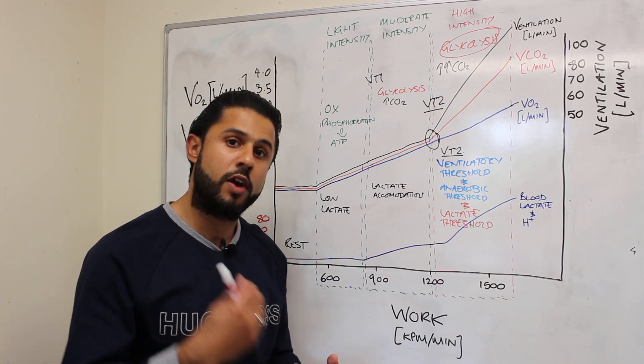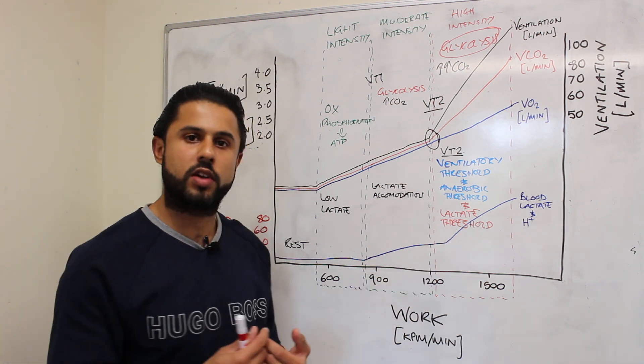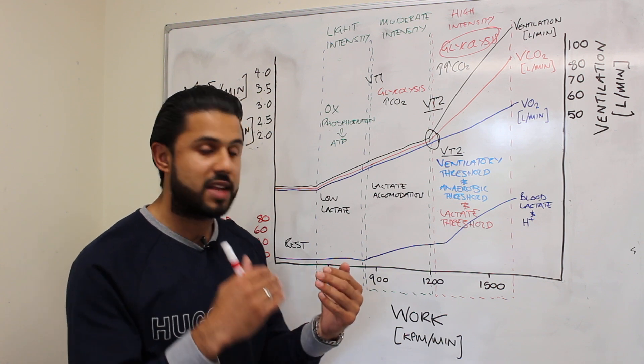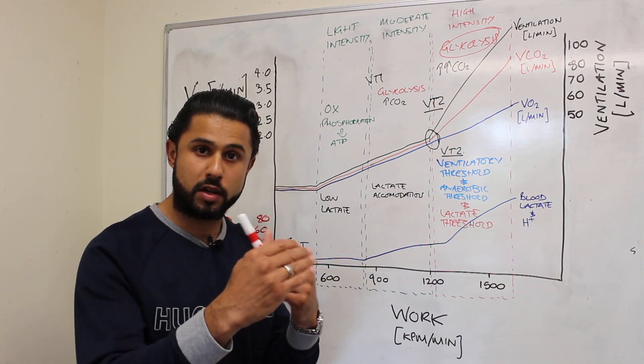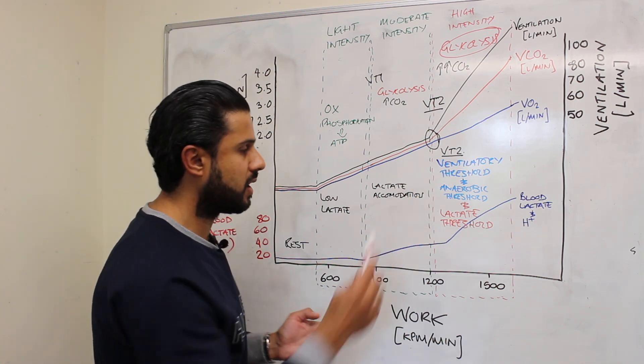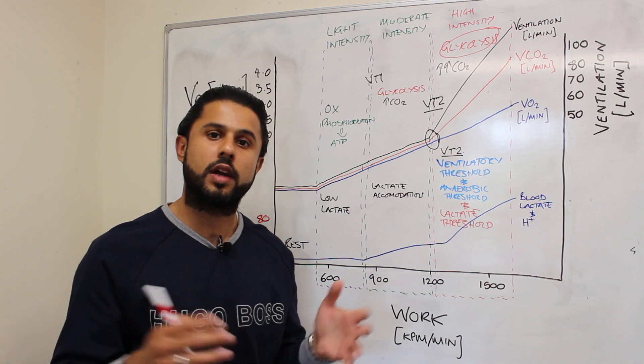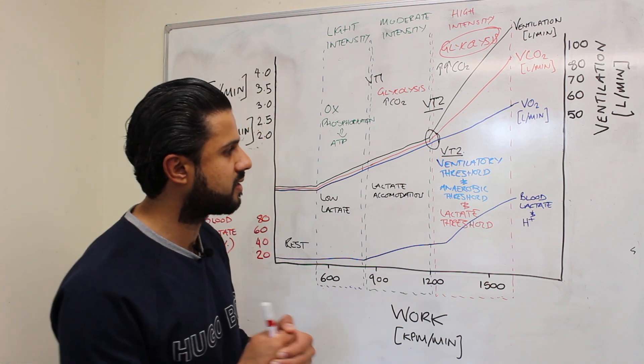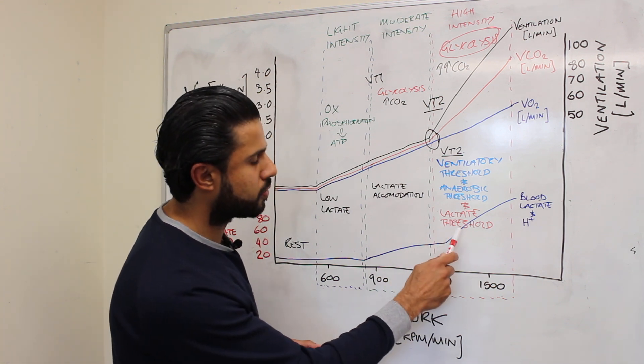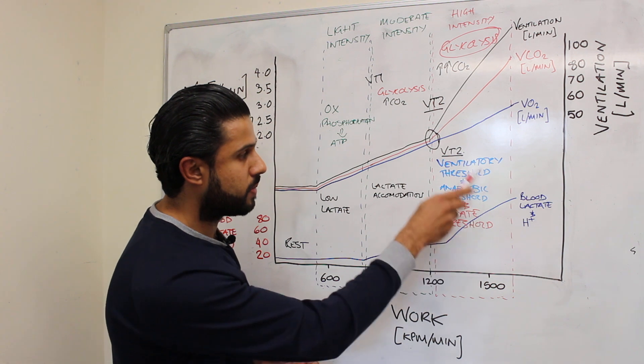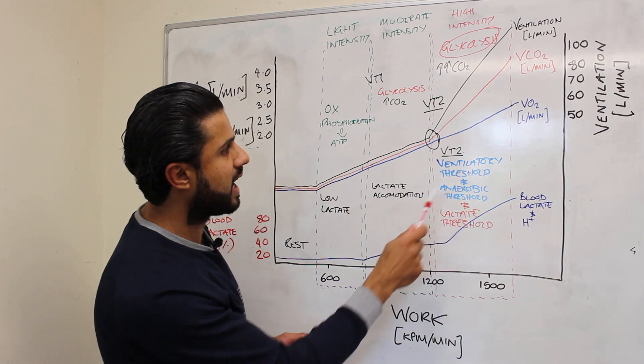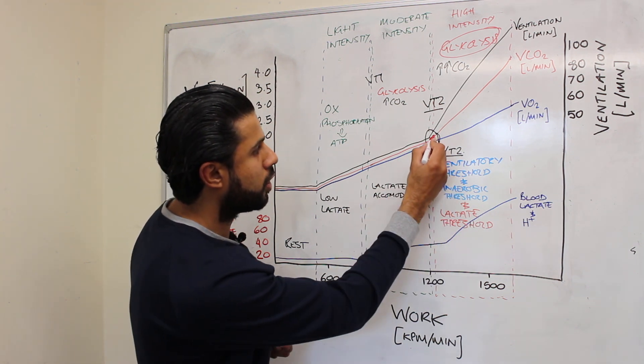So the likelihood is that lactate threshold occurs very close to the ventilatory threshold, really about either the same stage or within a stage of when the ventilatory threshold occurs if you were doing like an incremental exercise test. So the lactate threshold is also likely to be happening at the same time as the ventilatory threshold and anaerobic threshold which all occur around about this point here.